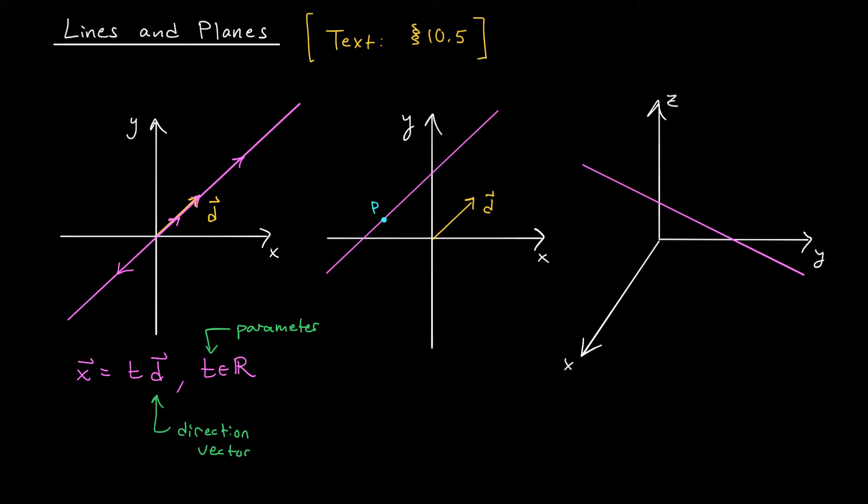But of course, not all lines are going to pass through the origin. Suppose that we have a line like this. It passes through a point P, but not necessarily through 0, 0. How do we find the equation of this line? Well, let's think about this. If we just take all multiples of D, we're going to get this parallel line through the origin. So what we want to do is shift that line up to pass through P. So what I'm going to do is consider this vector that points from the origin to P. We'll call it P vector. If I add P vector to the line that I had before, all of my points are going to shift up.